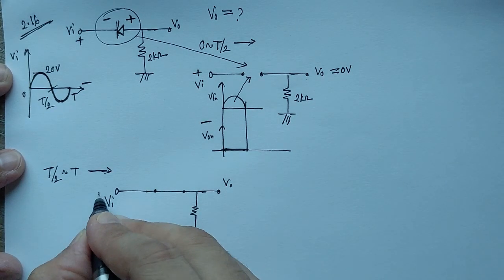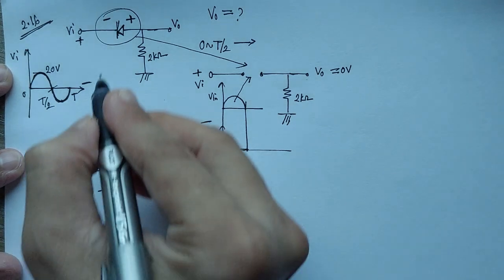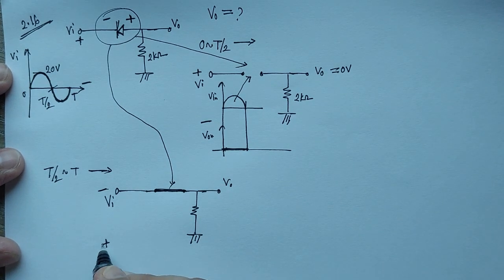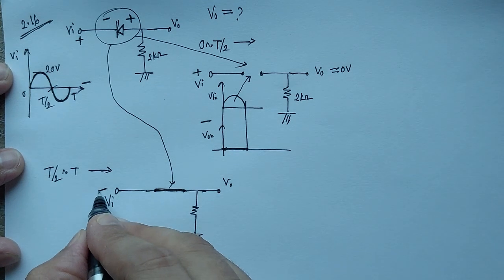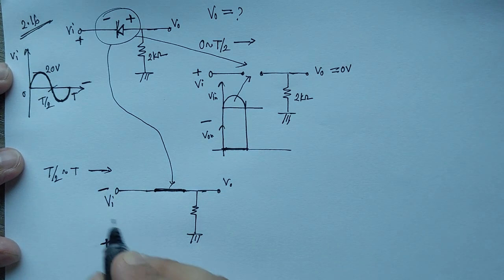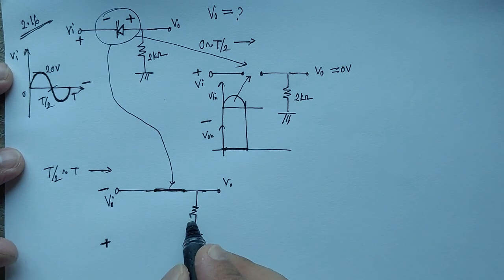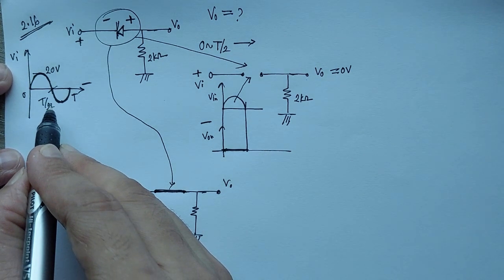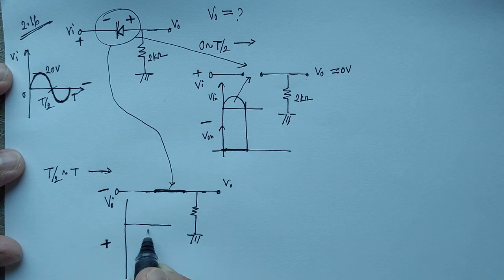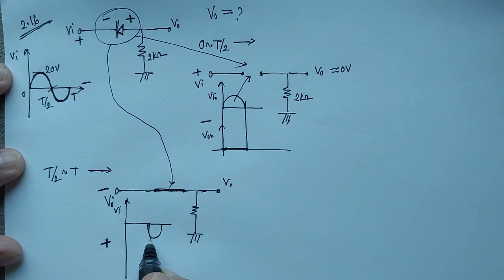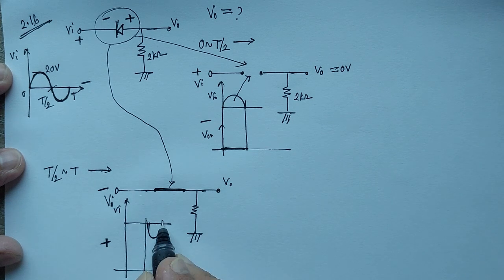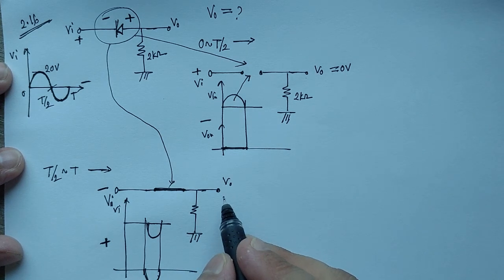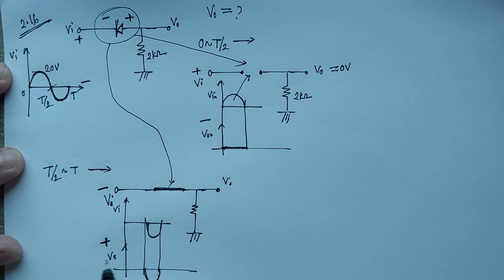The polarity will be reversed here, so this is a short circuit. The diode is short circuited. So whatever the input given here will appear across the output. That means for the second half cycle, from T/2 to T, the output signal will be the same as the input. So whatever the input given here will appear across the output.